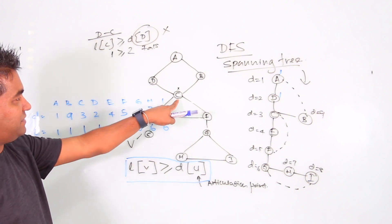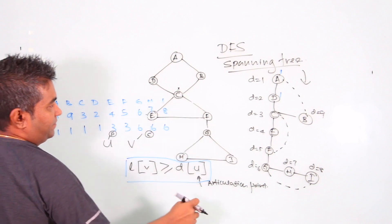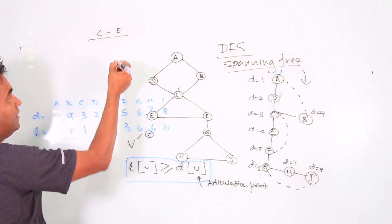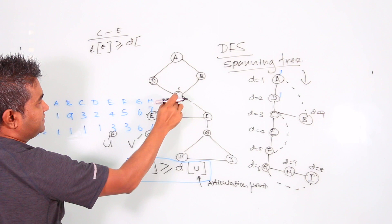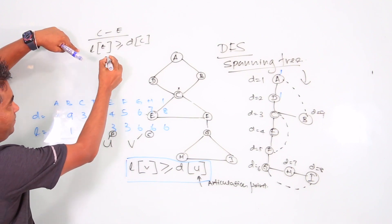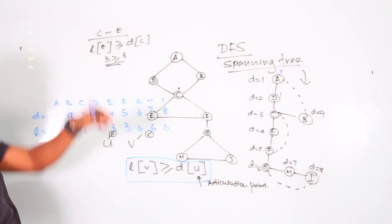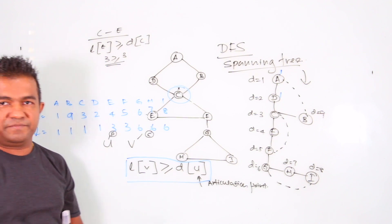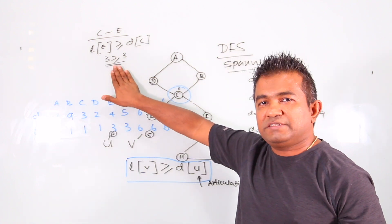Now let's check C. C is parent, E is child. Lowest index of E is 3, depth index of C is 3. Since 3 equals 3 — the condition is true — C IS an articulation point. We can verify this visually: if you remove C, the graph splits, confirming C is an articulation point.